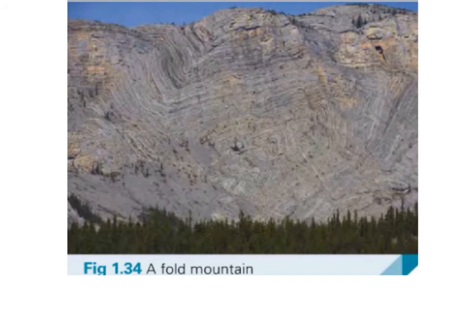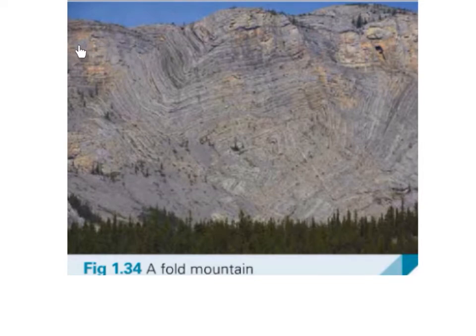Here we have a photograph of a fold mountain and you can actually see the folds. This section here would be the anticline because it's pushed upwards, and this section here would be the syncline because it's pushed downwards. If we look closely, we can actually see the folds.